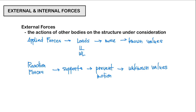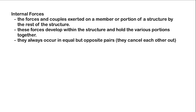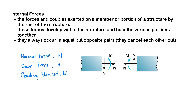Next, we have our internal forces, or internal loadings. These are the forces and couples exerted on a member or a portion of a structure by the rest of the structure itself. These forces develop within the structure and hold the various portions together. They always occur in equal but opposite pairs, meaning they cancel each other out. In general, the internal forces acting on a section will consist of your normal force, your shear force, and your bending moment.